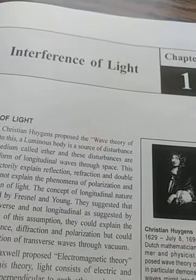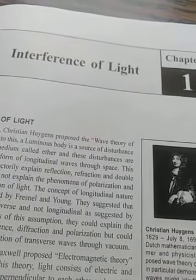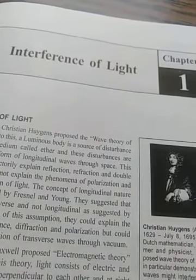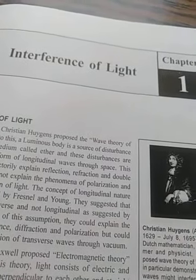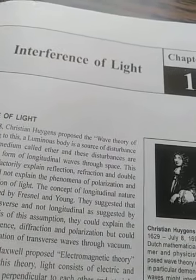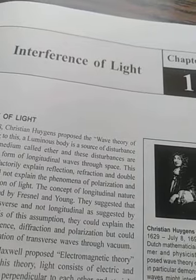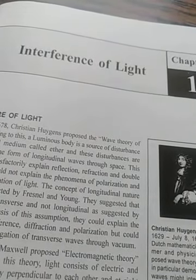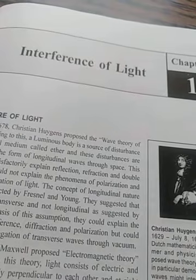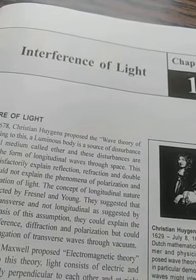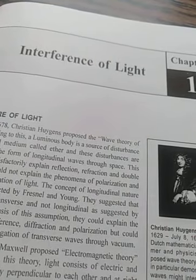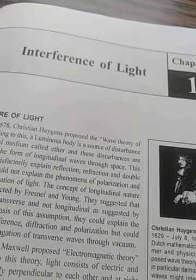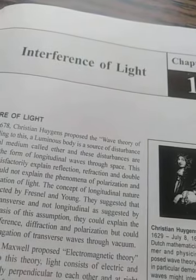And if the path difference is lambda by 2, 3 lambda by 2, 5 lambda by 2, 7 lambda by 2, or (n + 1/2) lambda, then we have destructive interference. In case of destructive interference, the intensity is 0, and in case of constructive interference, the intensity is maximum and generally it is 4I₀.